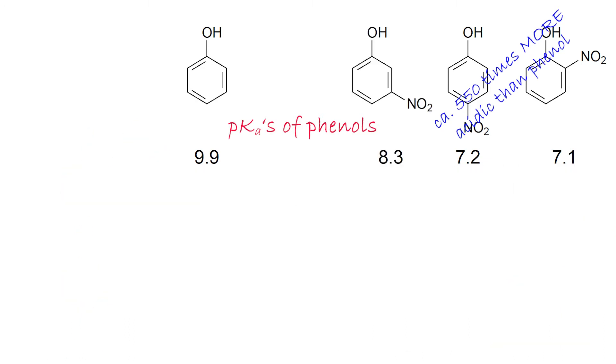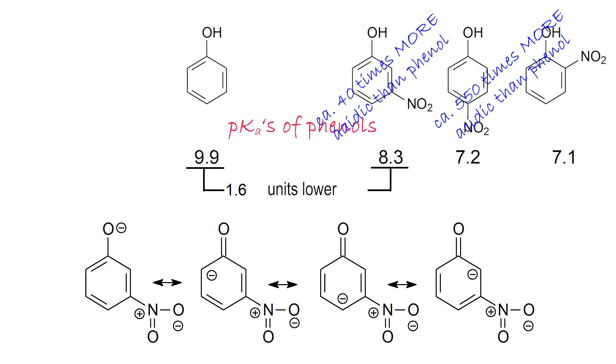The nitro group in meta also decreases pKa but by only 1.6 units. Meta nitro phenol is only 40 times more acidic than phenol. In this case, the direct resonance of the nitro group with the negative charge cannot be attained, and its delocalization is not possible by resonance effect. Despite this, meta nitro phenol is 40 times more acidic than phenol, which suggests that the nitro group in meta is still able to stabilize the negative charge by inductive effect due to its inherent electronegativity, even from the relatively remote meta position.